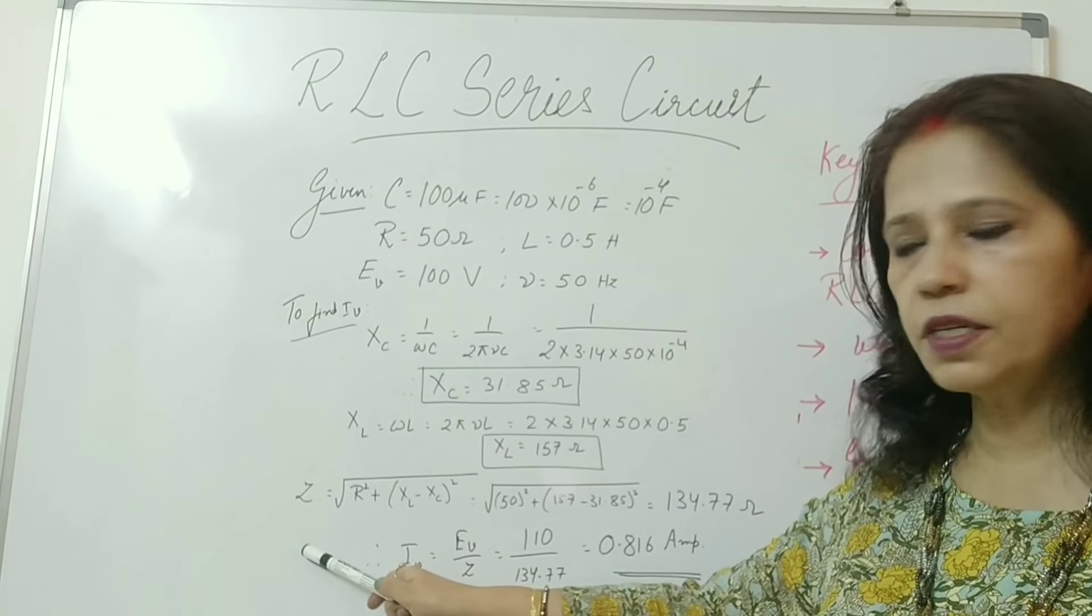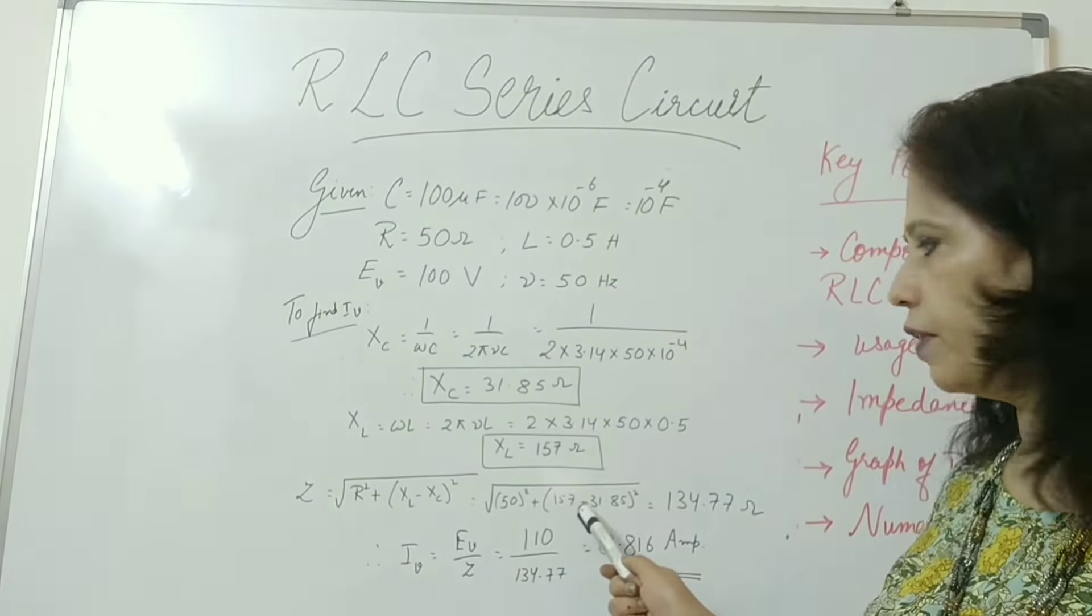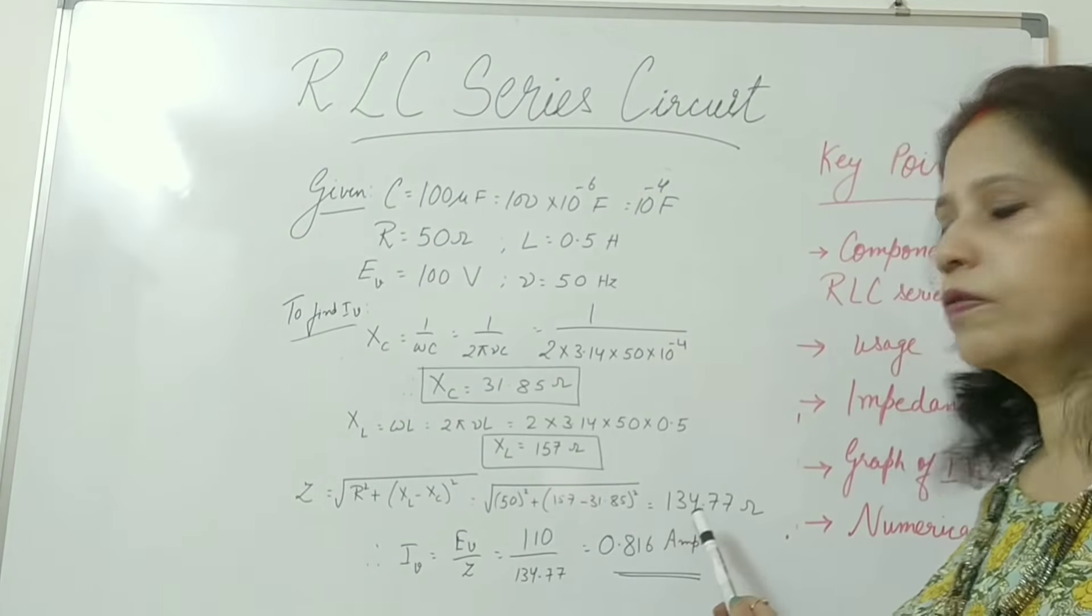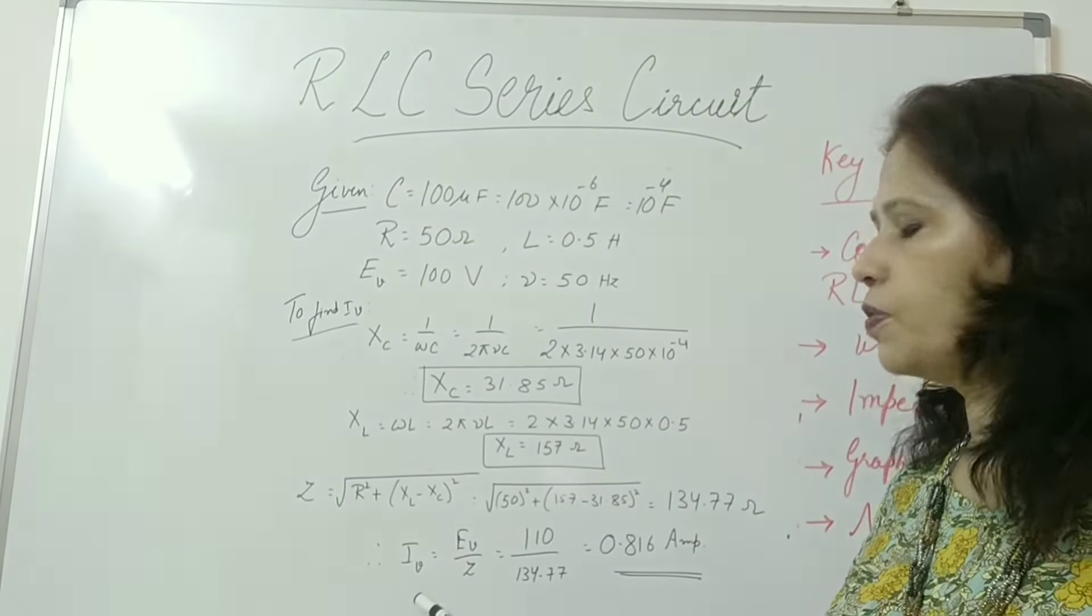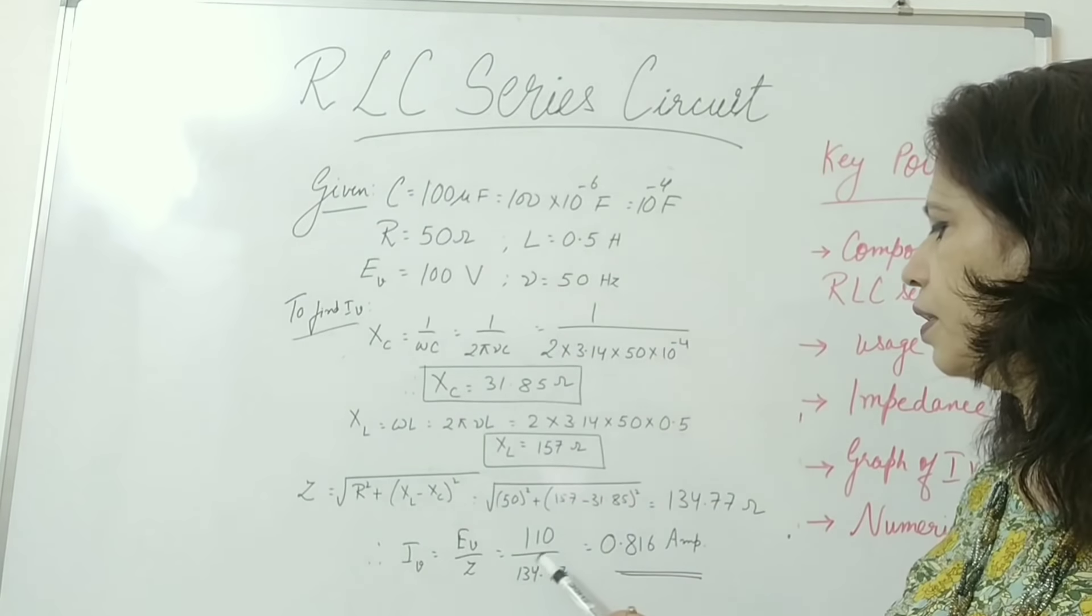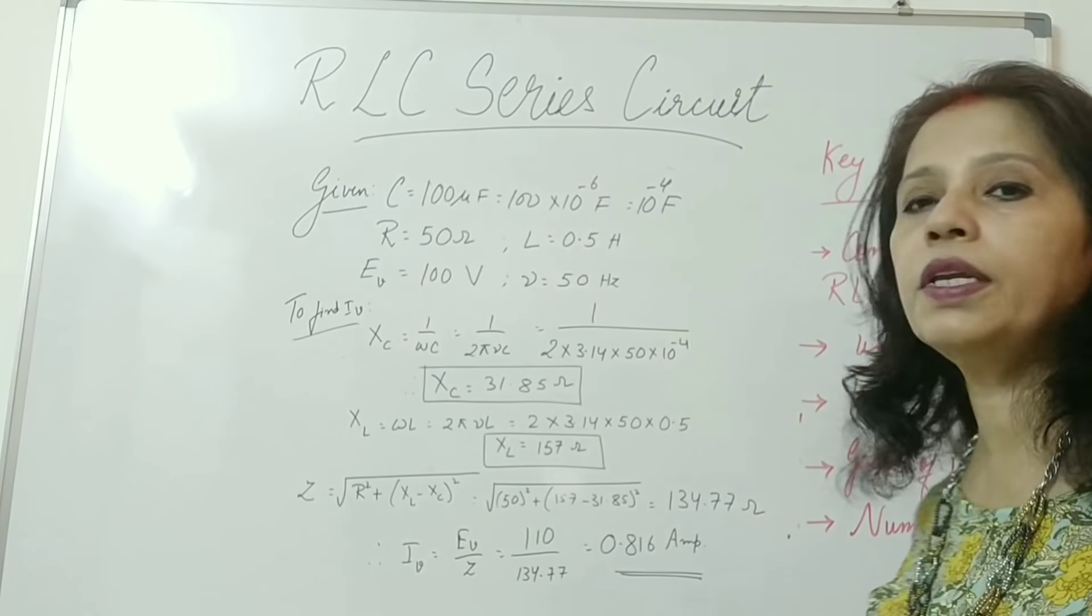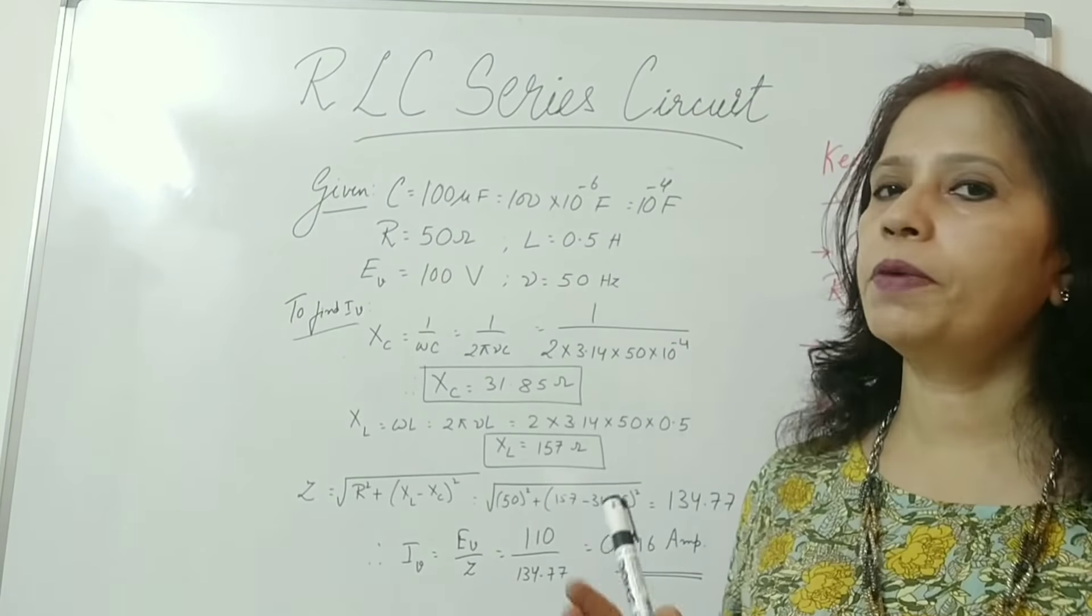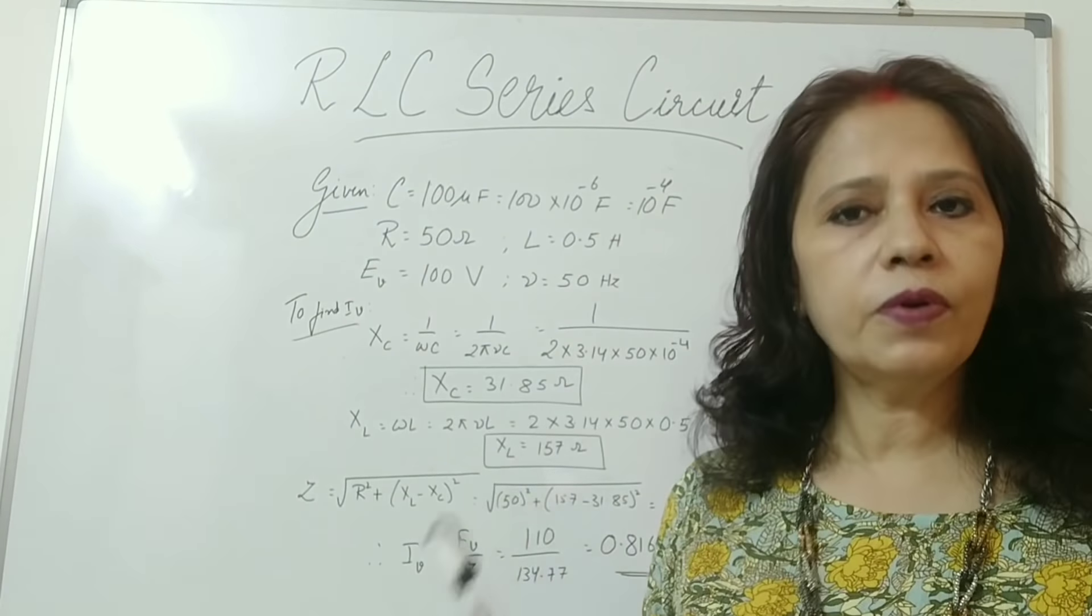Now the formula for impedance is this. So put the values over here R equals to 50 XL 157 XC 31.85 and then on solving we get 134.77 ohms. Now for finding the virtual value of I. IV will be equal to EV upon Z. EV is already given 110. So divided by 134.77 we get 0.816 Ampere. This is the answer. So I hope the topic must be very clear to you all. By more practice of numericals the topic will be more easy for you. Thank you.